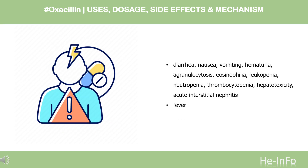Side Effects. Commonly reported adverse effects associated with the use of oxacillin include skin rash, diarrhea, nausea, vomiting, hematuria, agranulocytosis, eosinophilia, leukopenia, neutropenia, thrombocytopenia, hepatotoxicity, acute interstitial nephritis, and fever.